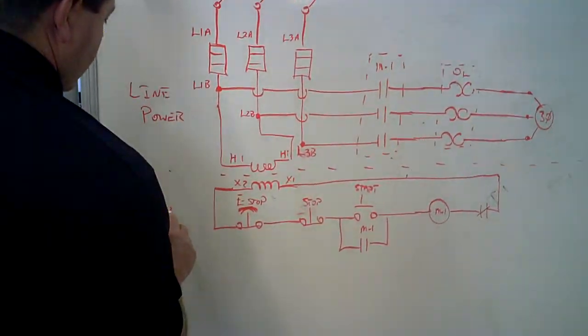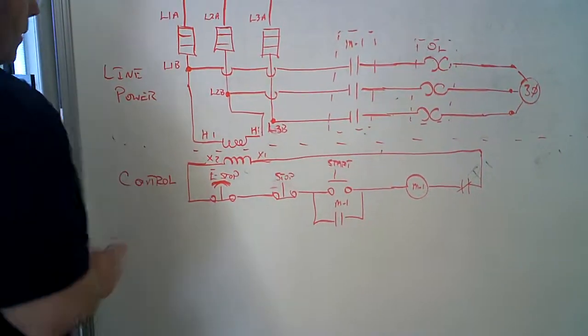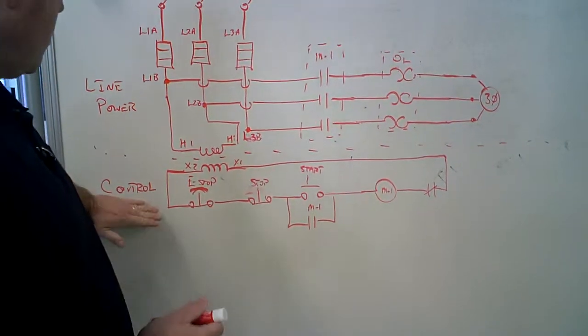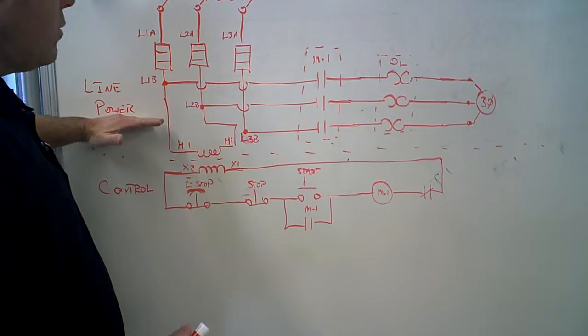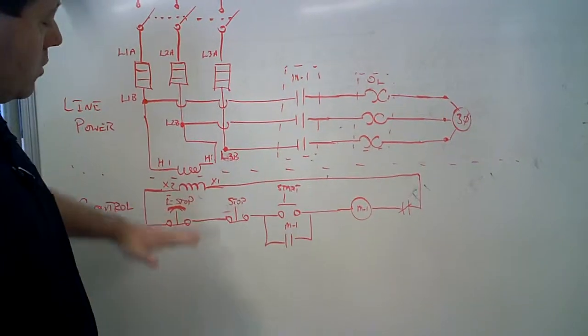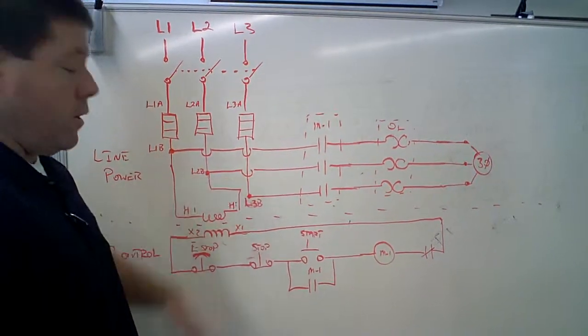Everything below this is called the control circuit. And the purpose of the control circuit is to cause the line power circuit to apply power to the motor. So the control circuit does nothing but control the power circuit.